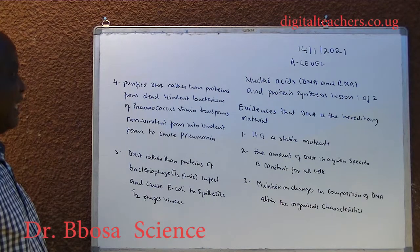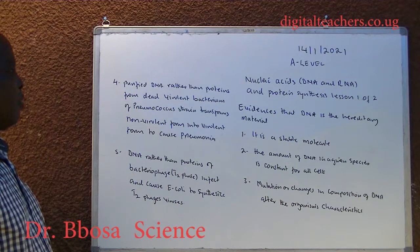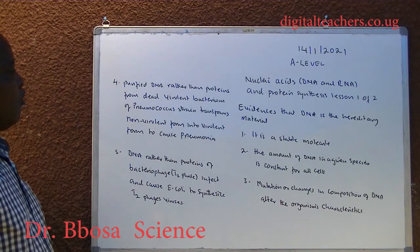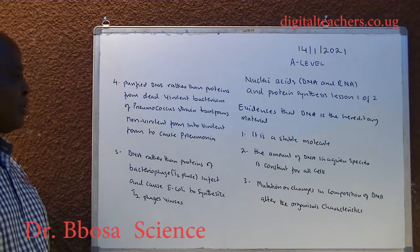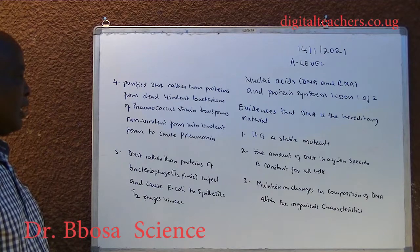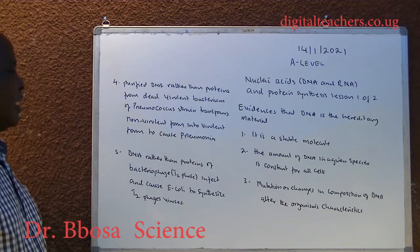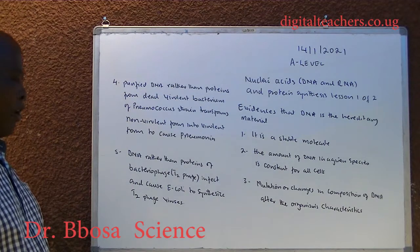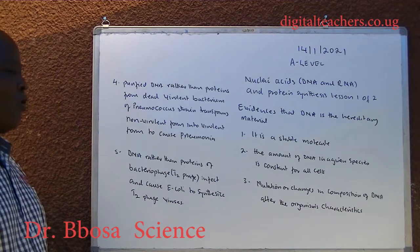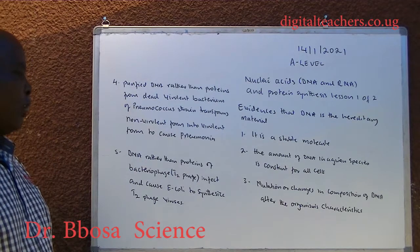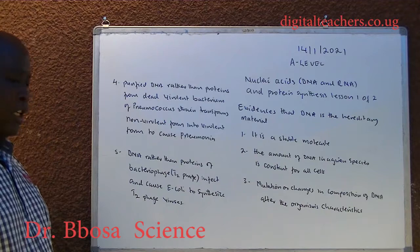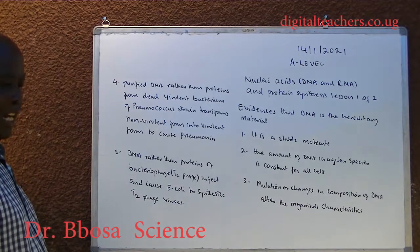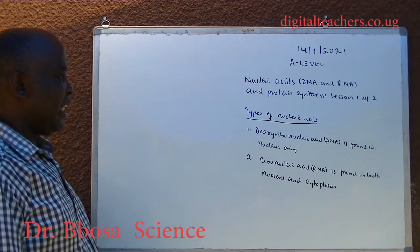Four, purified DNA rather than proteins from dead virulent bacterium of pneumococcus strain transforms non-virulent form into virulent form to cause pneumonia. Five, DNA rather than proteins of bacteriophage T2-phage infect and cause E. coli to synthesize T2-phage viruses.